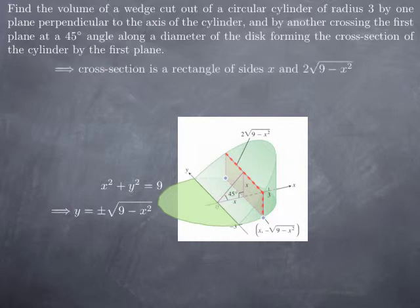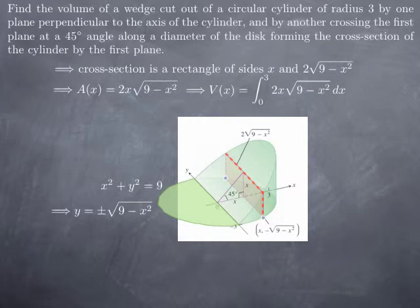So the cross section here is a rectangle whose sides are of length x and 2 root of 9 minus x squared. Therefore, the area of the cross section by x equals constant is given by 2x multiplied by root of 9 minus x squared. And since the volume of the wedge is given by the integral of this area of the cross section from 0 to 3, we get, for the volume, the integral from 0 to 3 of 2x root of 9 minus x squared.